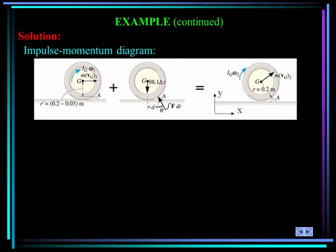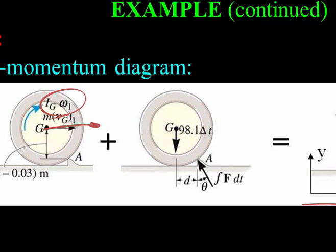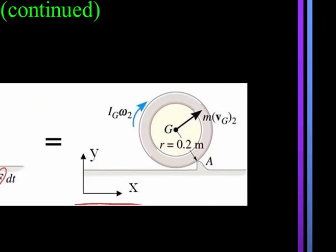The first step is to draw the impulse-momentum diagram and establish x-y axes. Initially, the center of the wheel has velocity V_G1 and angular momentum I_G·omega1 about G. Right when it hits the obstruction, the impulsive force F acts at point A; the weight impulse is ignored because the time is very short and the weight is very small compared to F. After impact, there is a new velocity V_G2 and new omega2. Since the wheel pivots about point A, the velocity at state 2 is at a right angle.